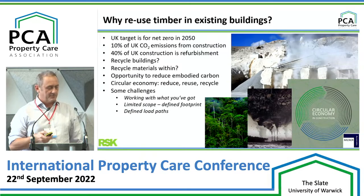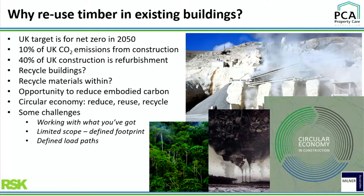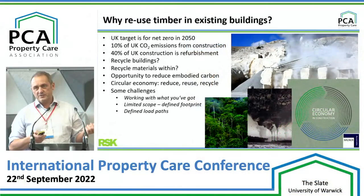So why do we use timber in existing buildings? The UK target for net zero is 2050, and that's quite an onerous target to reach. 10% of UK carbon dioxide emissions come from the construction industry. And when we drill down into that figure, we can look at data from the Chartered Institute of Building: 40% of UK construction effort is based on refurbishment and maintenance of buildings. There's a huge opportunity to reduce embodied carbon in construction materials if we can reuse what we've got.